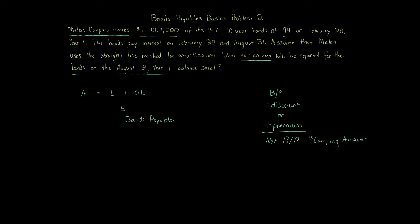We're asked to calculate the net amount. The first thing you always do is take the face value — here $1,007,000 — and multiply it by the issuance percentage, here 99, which is 0.99. When we multiply those numbers, we get $996,930. That amount is the carrying amount of bonds when issued. The bonds were issued on February 28th, year 1.